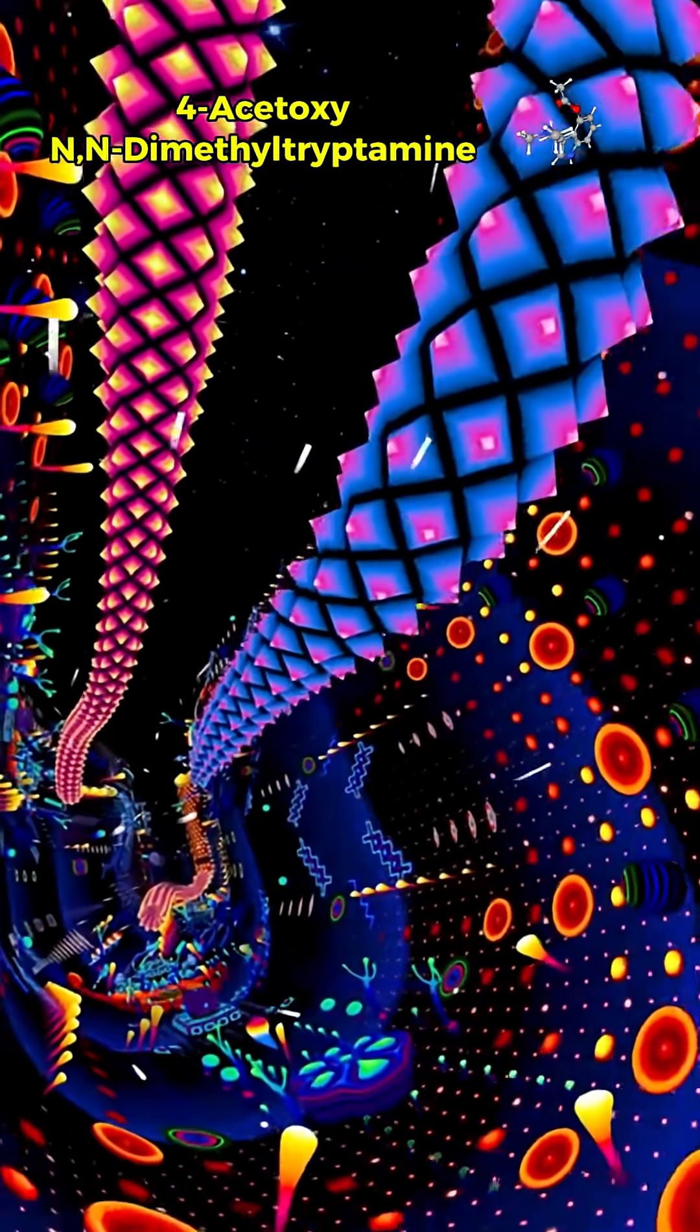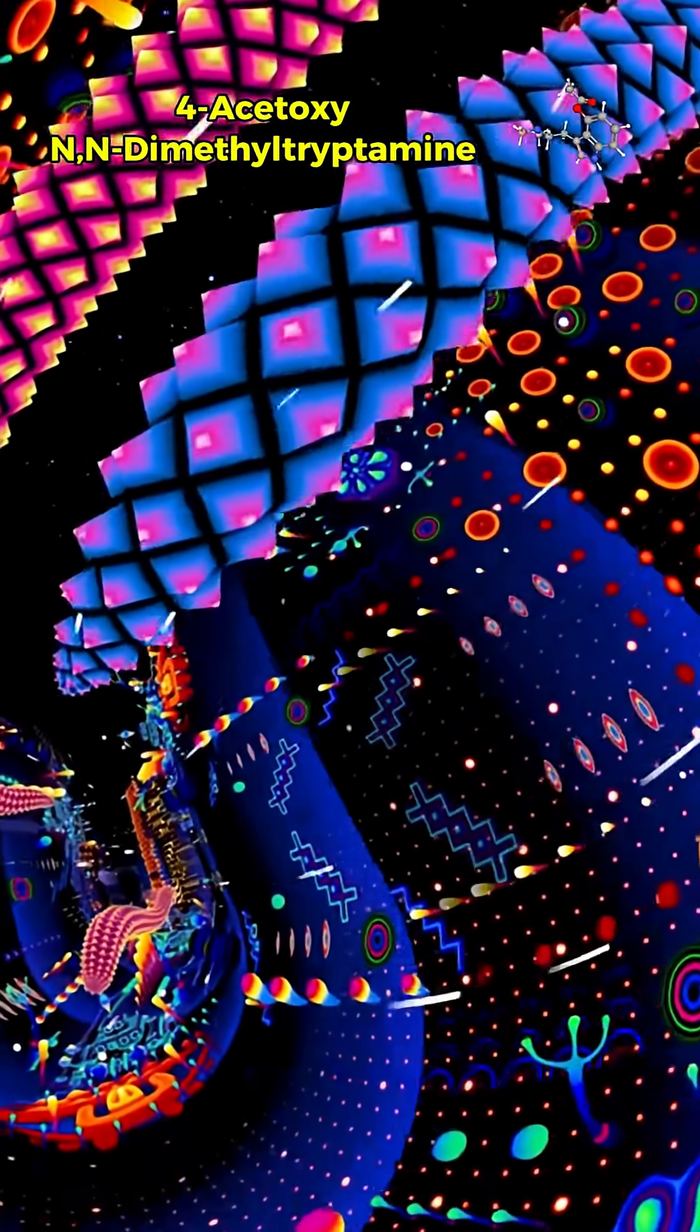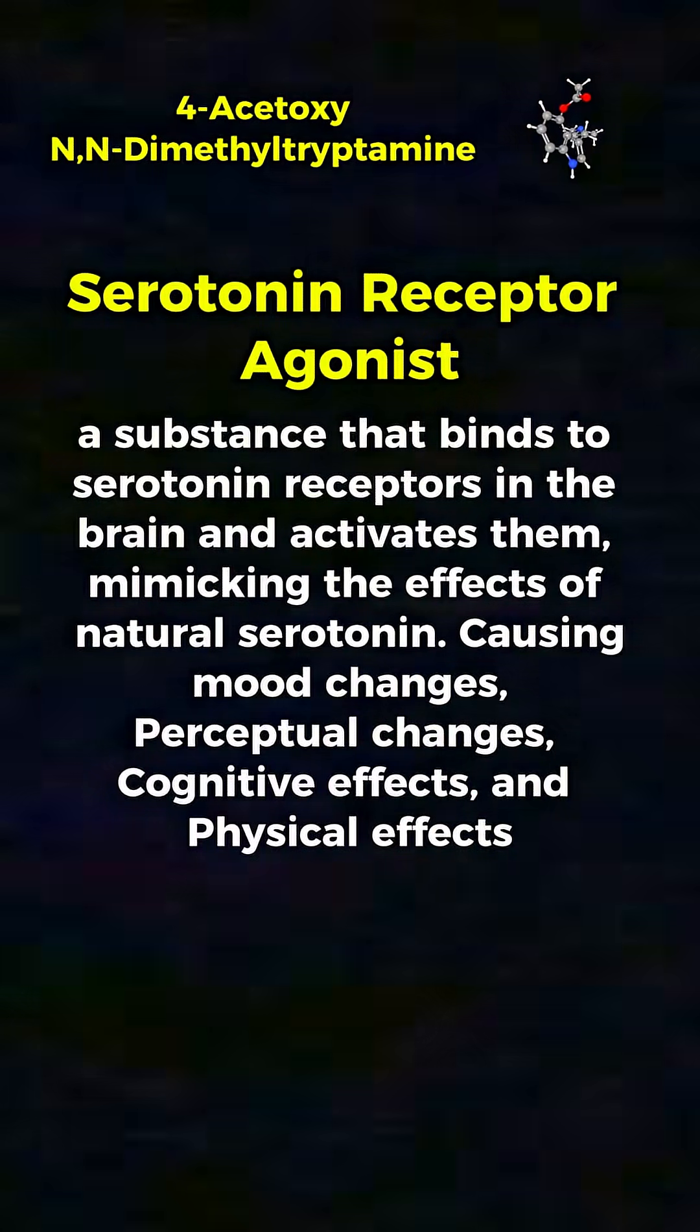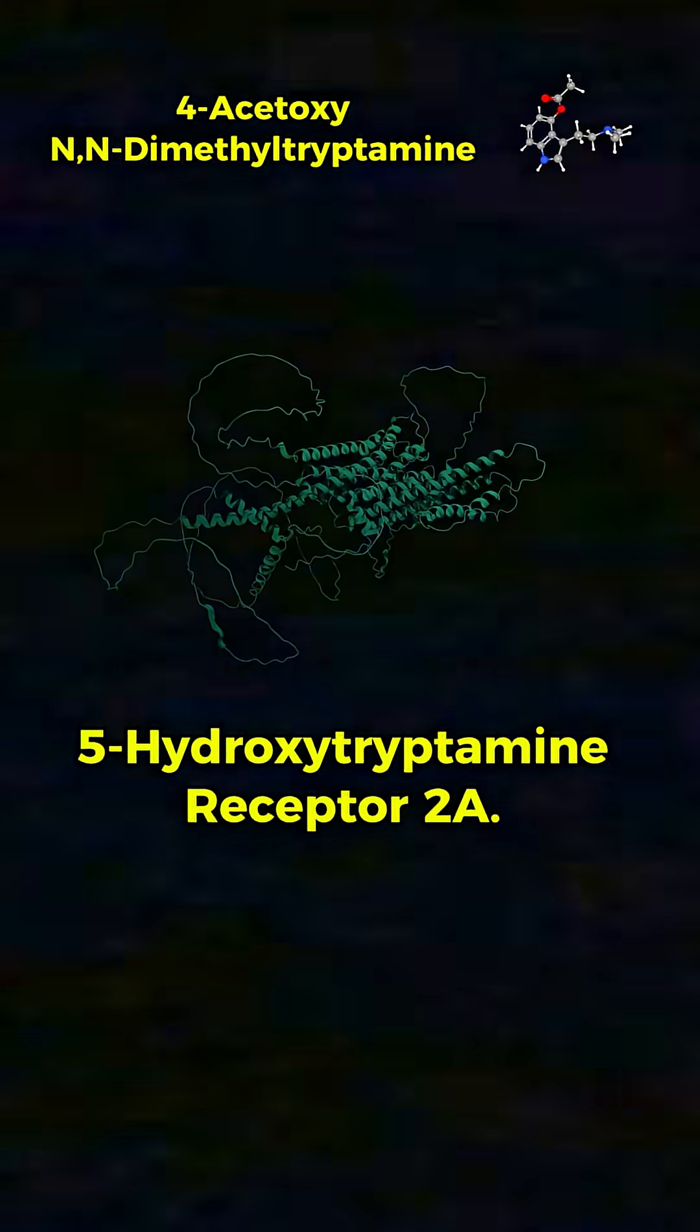Like psilocybin, 4-ACO-DMT primarily acts as a serotonin receptor agonist, binding most strongly to the 5-HT2A receptors.